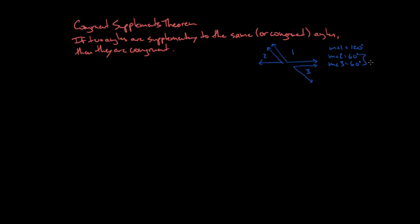This also applies to the 'or congruent angles' part. So if I had another angle, angle 4, and angle 2 is supplementary to angle 1, and angle 3 is supplementary to angle 4, and angles 1 and 4 are congruent to each other — it's just a chain of logic — those two angles, 2 and 3, will still be congruent to each other. So this is the Congruent Supplements Theorem.